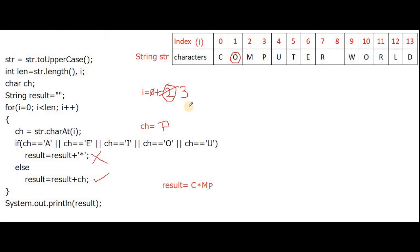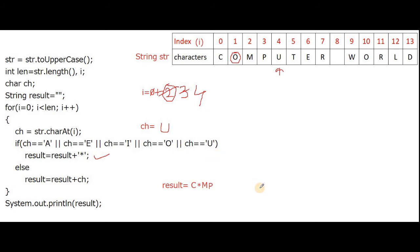Next iteration i is now 4. From position 4, the character is capital letter 'U'. Checking whether U is a vowel — yes, U is a vowel. So this statement executes: result = result + star. With the last value of result, a star is printed, giving C*MP*.